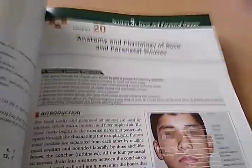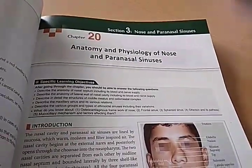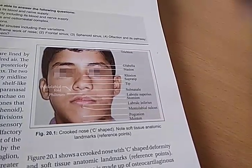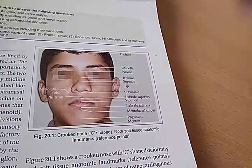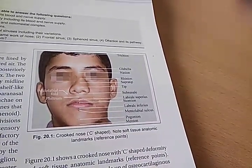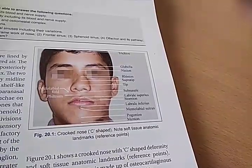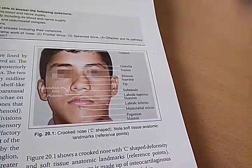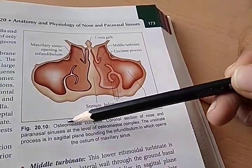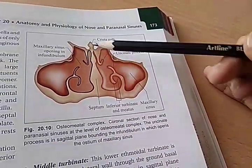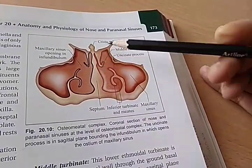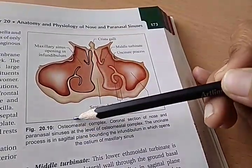Anatomy of the nose — they are talking about the C-shaped nose, which has something to do with septal deviation. Here is the osteomeatal complex — see this diagram, you will have to draw it in the exam if they ask you about the osteomeatal complex.